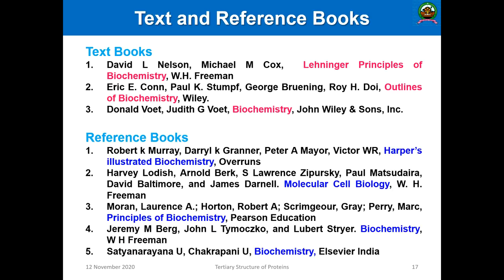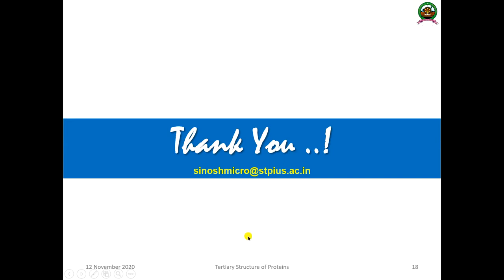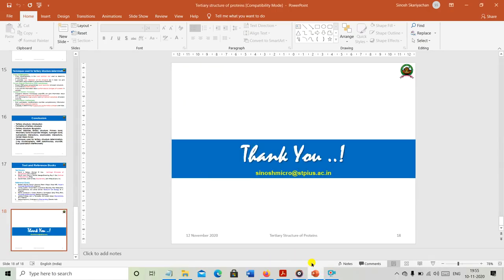To summarize, we discussed: the tertiary structure of protein and its definition; motifs and domains; how tertiary structure is produced from primary and secondary structure; myoglobin as the first well-studied tertiary structure, solved by Dr. John Kendrew who received the Nobel Prize; the forces stabilizing tertiary structure — primary bonds (peptide bond) and secondary bonds including disulfide linkages, hydrogen bonds, hydrophobic interactions, electrostatic interactions, and van der Waals interactions; and methods for studying structure including X-ray crystallography, NMR, cryo-EM, dual polarization interferometry, and bioinformatics approaches. Recommended texts include Lehninger's Principles of Biochemistry and Biochemistry by Jain. Thank you, dear students.